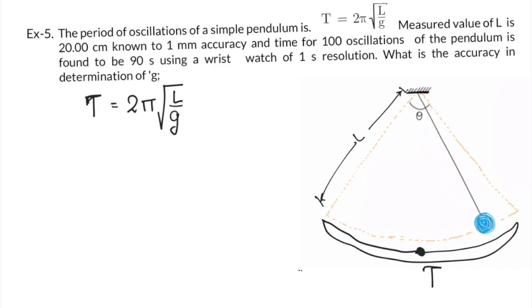So time period of pendulum is affected by two things: only length of the pendulum and gravitational acceleration at that point. Now 2π is not useful for us because it is constant, it is not a variable.